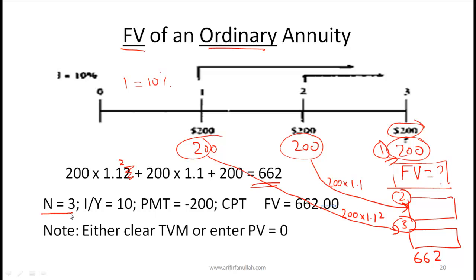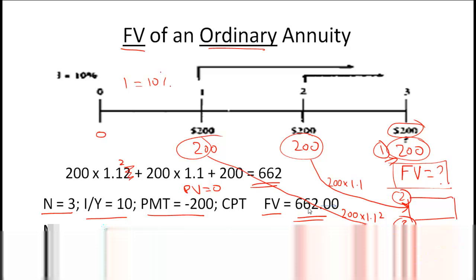On the calculator: N = 3, interest rate = 10%, payment = minus 200, present value = 0 — nothing going in at time zero — compute future value, and you will get 662. Had you put in positive 200, the future value would be negative. The calculator convention is that the output is always a different sign from what you put in.